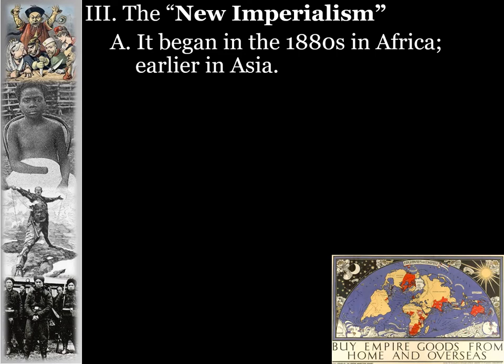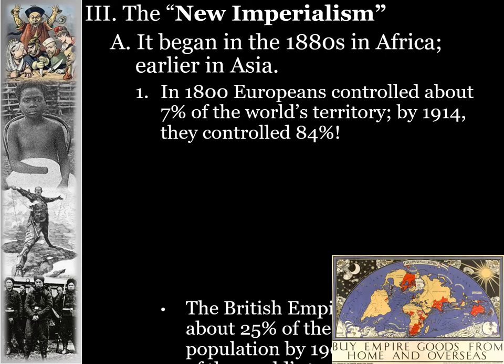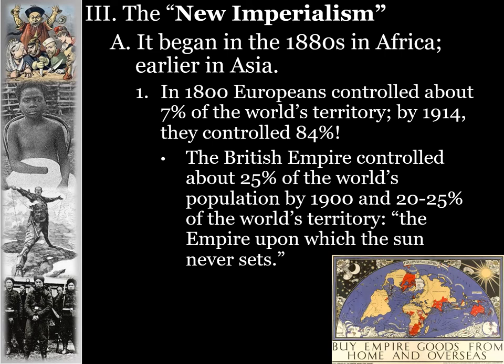New imperialism began in the 1880s in Africa, and a little earlier when you look at Asia. In 1800, Europeans controlled about 7% of the world's territory, but by 1914, Europeans controlled about 84% of the world's territory. The British Empire controlled about 25% of the world's population by 1900, and between 20% to 25% of the world's territory by that same date.